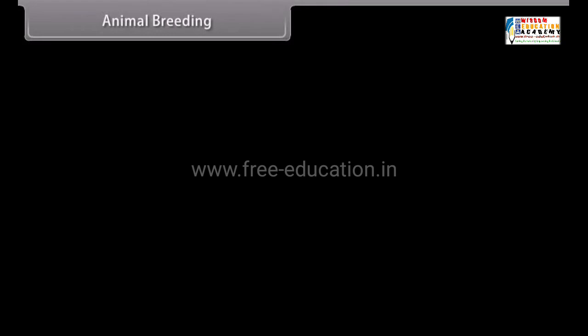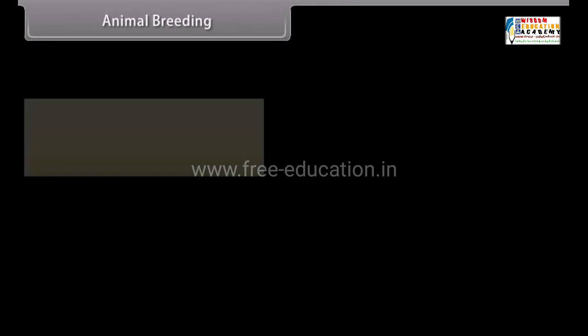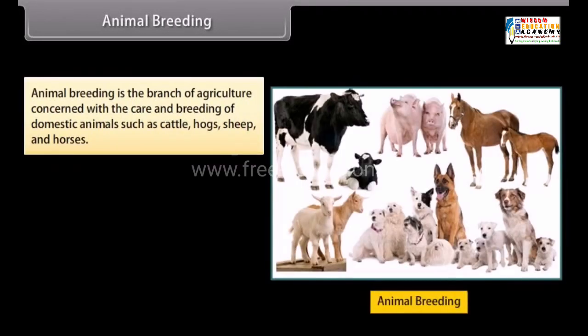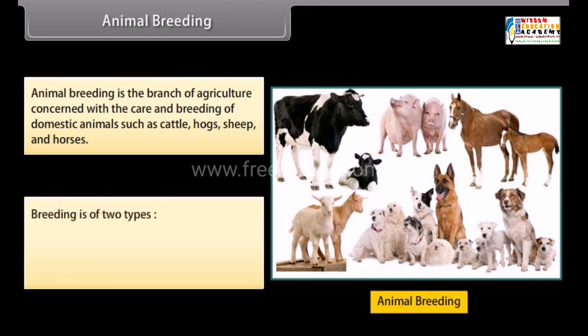Animal breeding is the branch of agriculture concerned with the care and breeding of domestic animals such as cattle, hogs, sheep, and horses. Breeding is of two types: inbreeding and outbreeding.